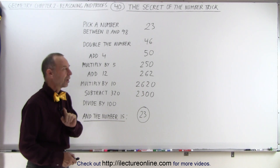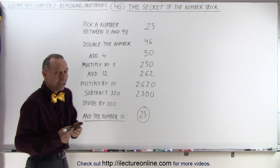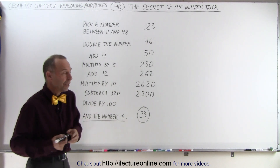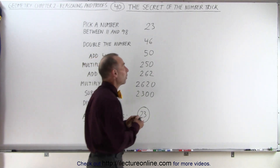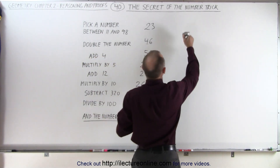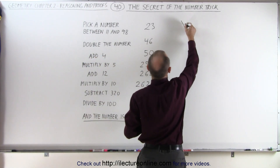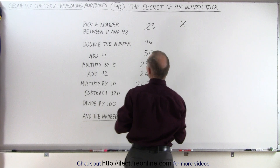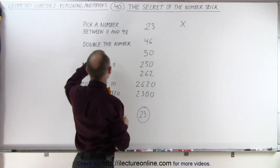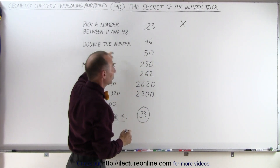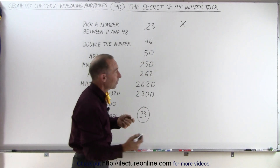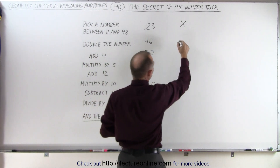This is how you figure it out. Instead of picking 23, pick an arbitrary number — let's call it x. Now we're going to double that number. So double x would be 2x.